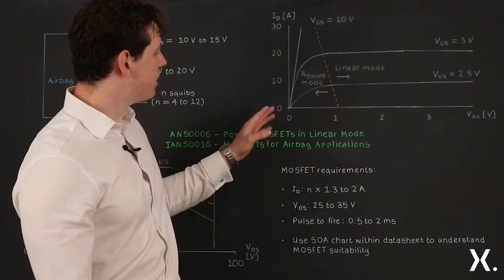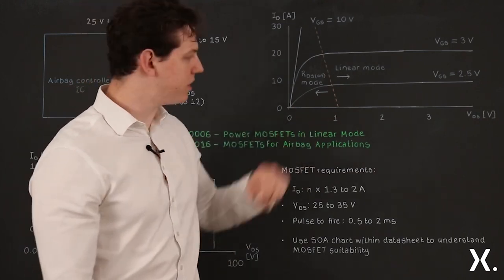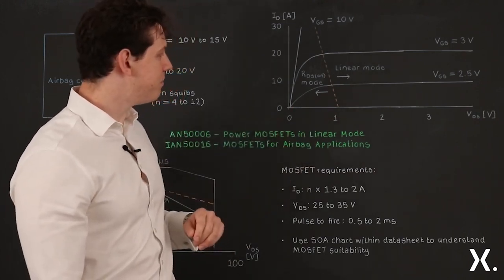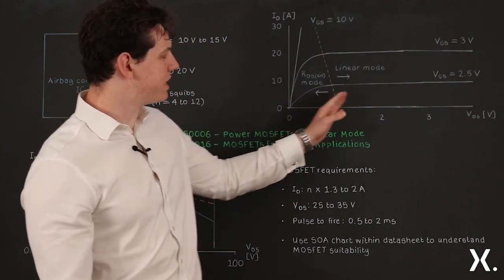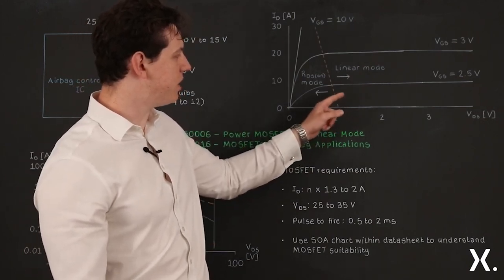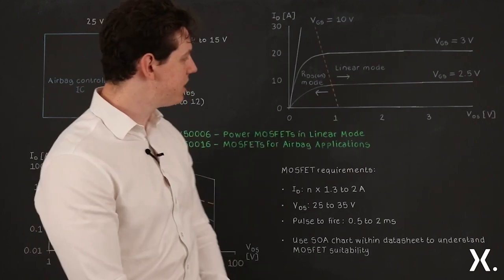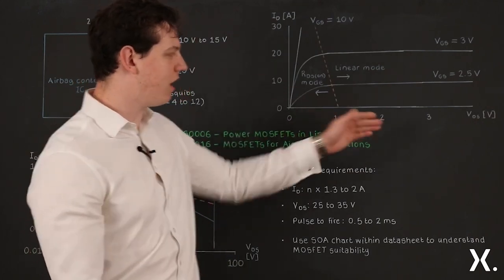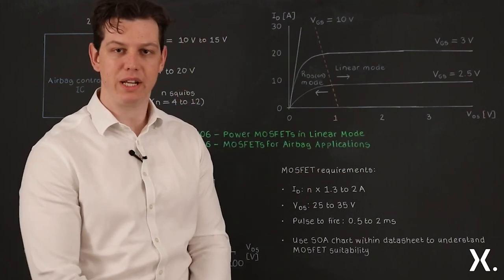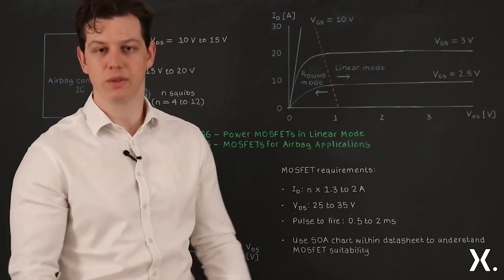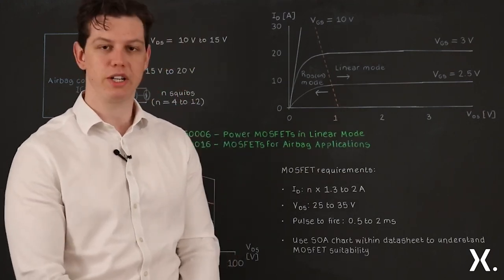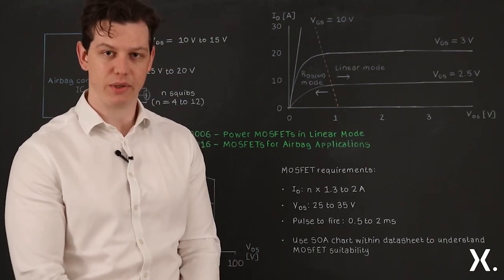The current is roughly proportional to the drain source voltage but after this dashed line we have what's known as linear mode. This is an area of high current and high voltage which means there's a lot of power being dissipated by the MOSFET. It's a very demanding mode of operation and because of this it's usually avoided.